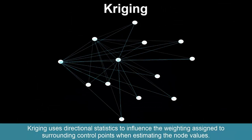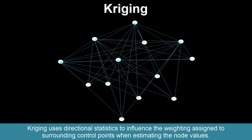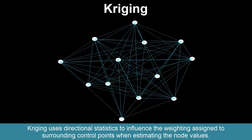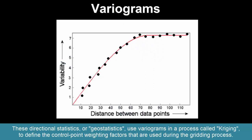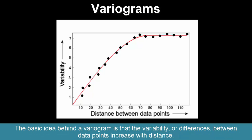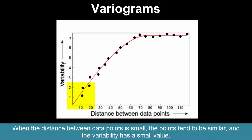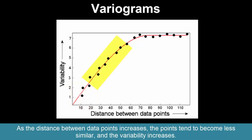Kriging uses directional statistics to influence the weighting assigned to surrounding control points when estimating the node values. These directional statistics, or geostatistics, use variograms in a process called kriging to define the control point weighting factors used during gridding. The basic idea behind a variogram is that the variability or differences between data points increase with distance. When the distance between data points is small, the points tend to be similar and the variability has a small value. As the distance increases, the points tend to become less similar and the variability increases.